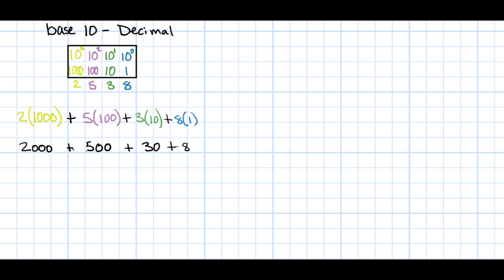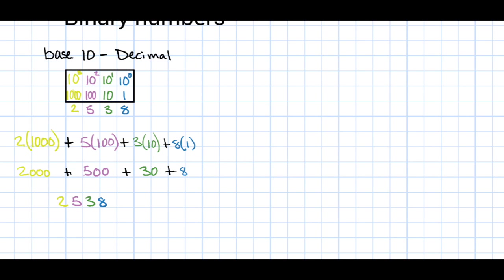For example, 2 times 1000, plus 5 times 100, plus 3 times 10, plus 8 times 1. Of course, once we add all of those products back together, we get our original number, 2538.